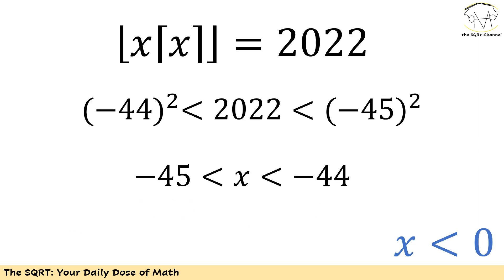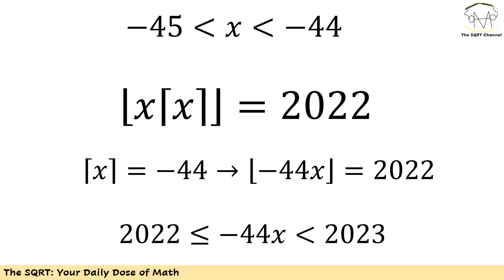Now let's focus on negative values. For negative values, 2022 is between (-44)² and (-45)², so x is going to be greater than -45 and less than -44. Since x is between -45 and -44, ceiling(x) = -44. Then we need floor(-44x) = 2022.